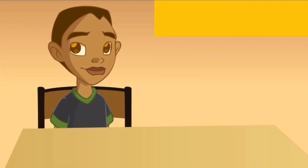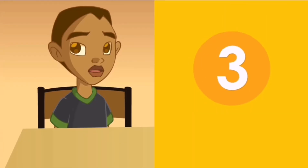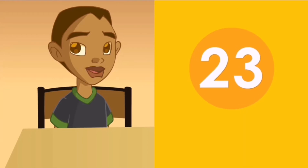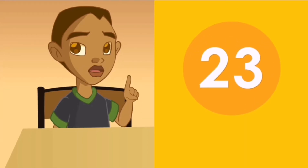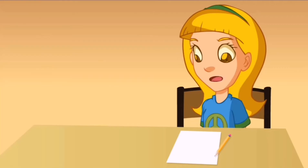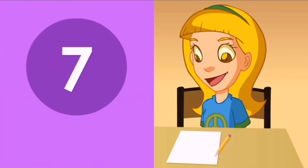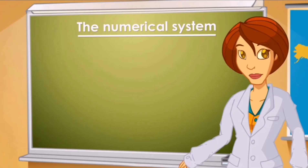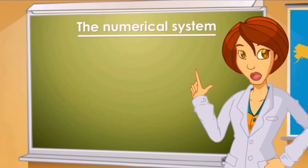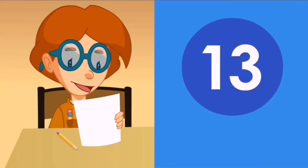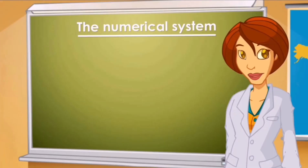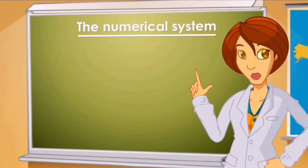Numbers with one figure go from zero to nine. If we add another number in front of those numbers, we get larger numbers. Very well! On my list, the smallest number is seven. Now, check what the following number is. Thirteen. And from seven to thirteen, how many numbers do we have?